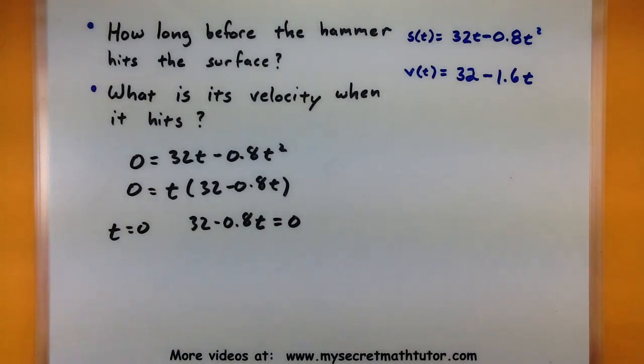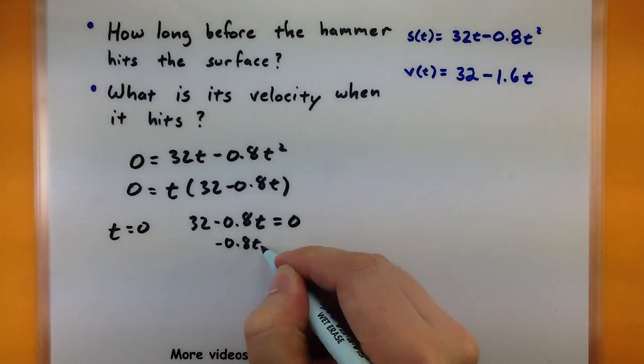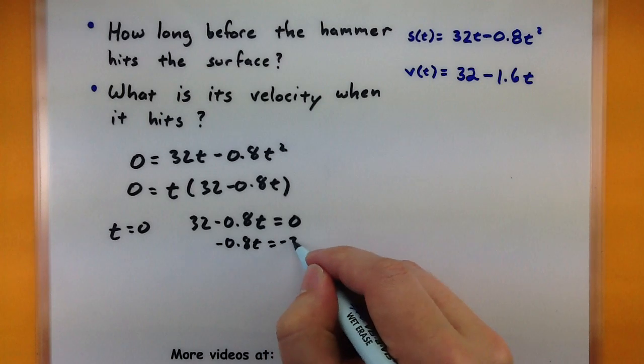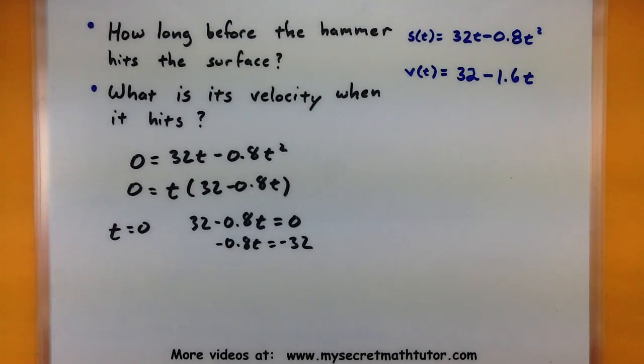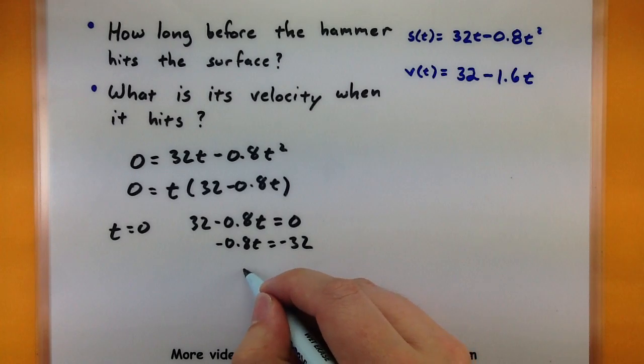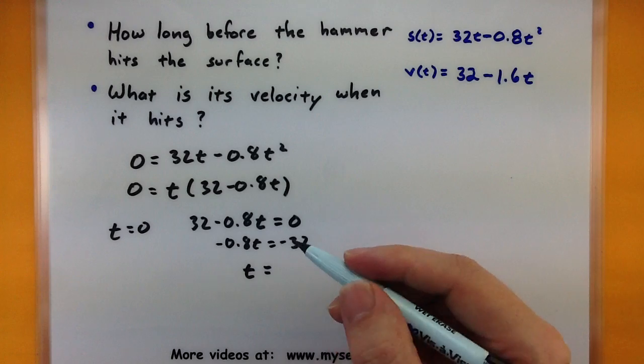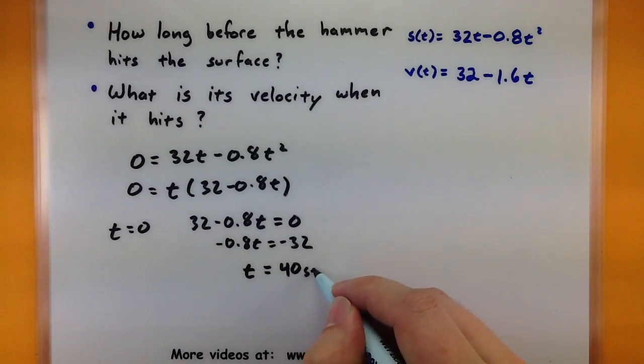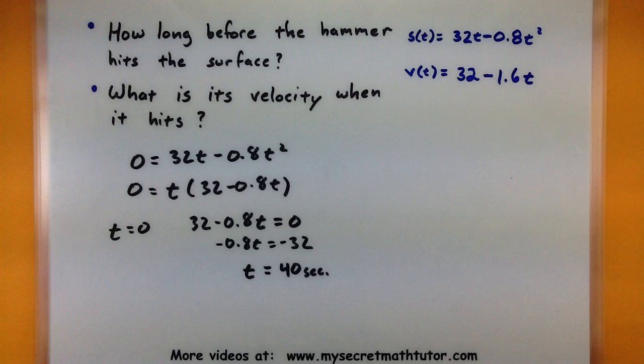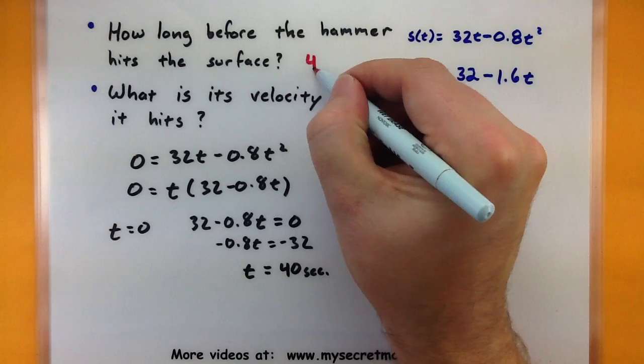This little spot is corresponding to when it first leaves the surface of the moon, so it's initial time. I'm not really interested in that. Let's go ahead and solve this guy to see where it hits the surface again. So we want to move that 32 to the other side, negative 32, and divide both sides by a negative 0.8. So negative 32 divided by negative 0.8, that would give us 40. So now we can answer this question. How long before the hammer hits the surface? 40 seconds.